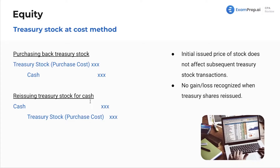When reissuing treasury stock for cash, we debit cash because we received cash, and we credit treasury stock at the purchase cost. This is the cost method because we don't deal with par value — it's the simpler one. With the par value method, we'd see APIC and par value entries.